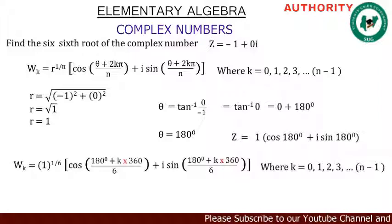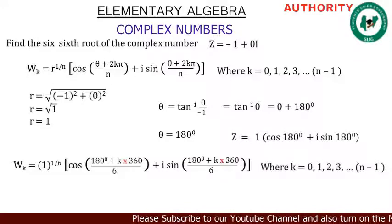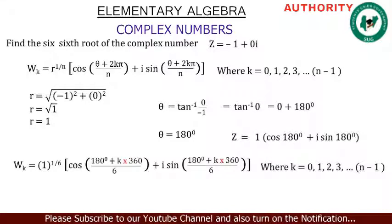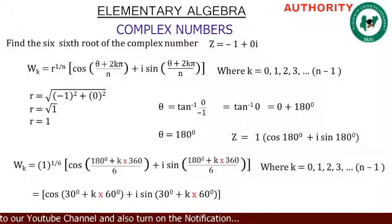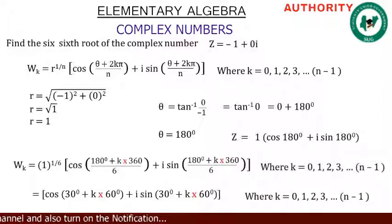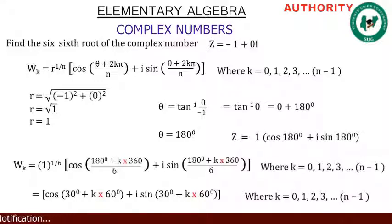Since 1 raised to power 1/6 is 1, everything remains the same. We simplify: 180/6 = 30 and 360/6 = 60. So wk = cos(30 + k·60°) + i·sin(30 + k·60°), where k = 0, 1, 2, 3, up to n minus one.